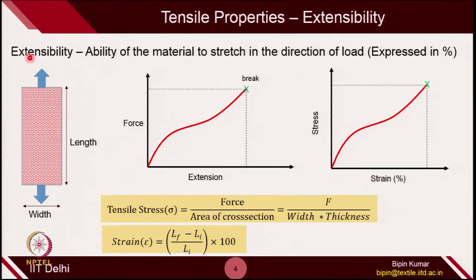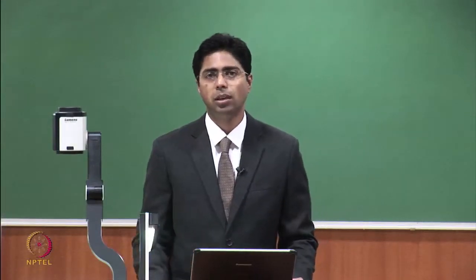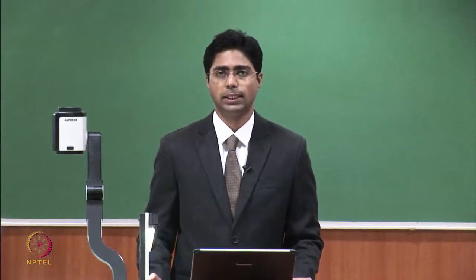Extensibility depends on many fabric structural parameters, especially loop length, the kind of stitches, and the kind of yarn used in the fabric material. Not only the material but also the structural parameters of the fabric will control extensibility.